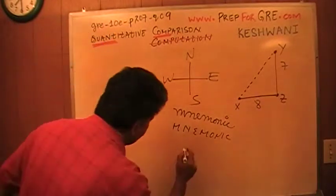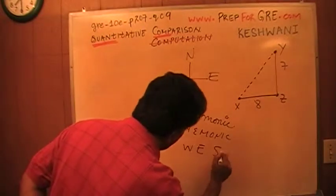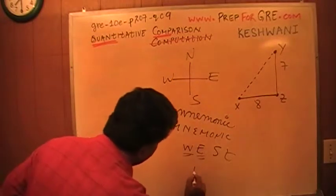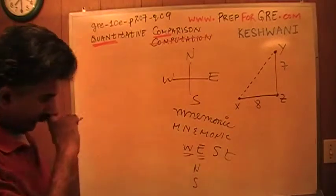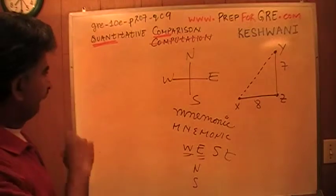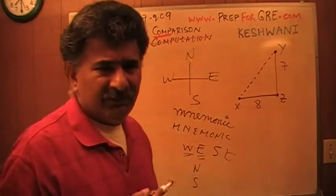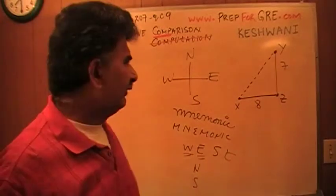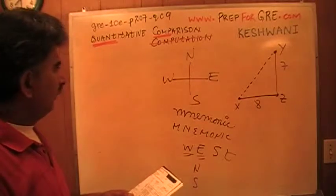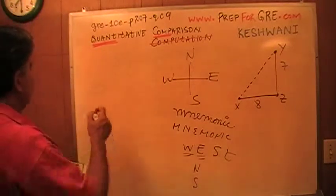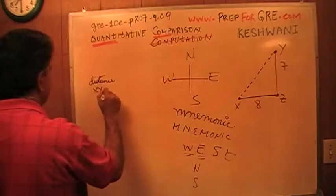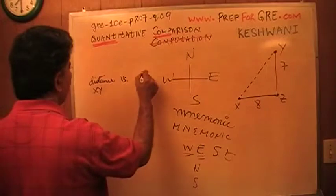So again, if you write west, W appears on the left hand side, E appears on the right hand side. And north and south, you just write them in alphabetical order. North goes to the top, south goes to the bottom. So they want you to compare the distance XY versus 9 miles. What should we do?